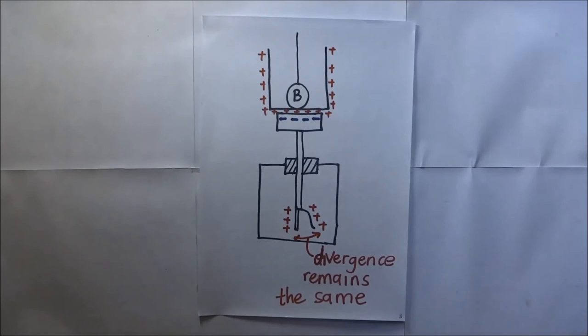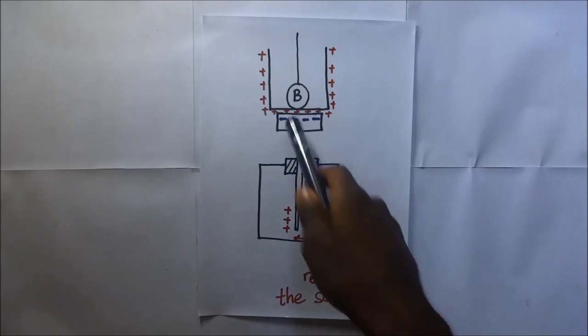Now why does that happen? It's no longer having a charge, but the divergence of the gold leaf is still remaining the same. So the question is, why is it that sphere B, which was initially charged, is no longer charged? The only way you can explain this is that when the sphere was allowed to touch the inside of the ice pail...